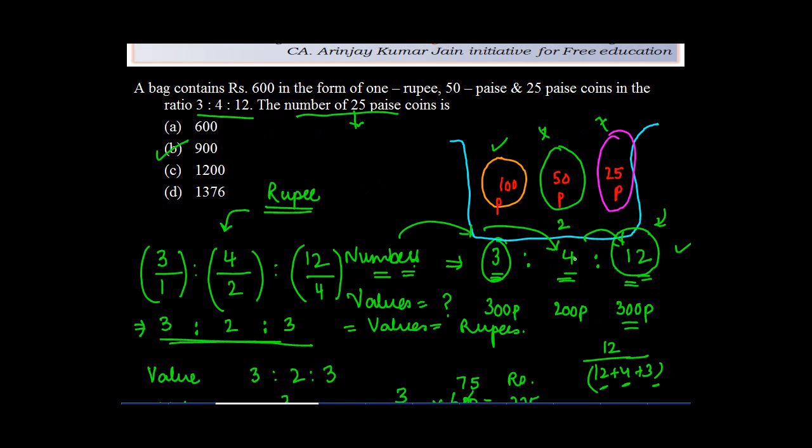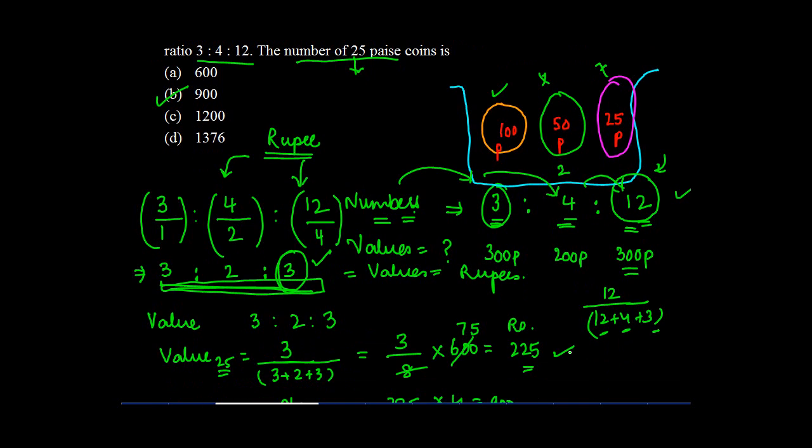So first, we put these things in terms of a common value. And number obviously cannot be common. So we put it in terms of rupee. Once we get the ratio in rupees, we find out what is the value in number of rupees for the 25 paise coin. And once we get this value of 225, then we know that each rupee has 4 coins of 25 paise. So we multiplied by this to get 900. I hope you would have understood this.